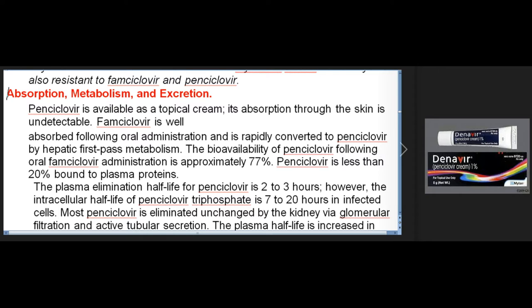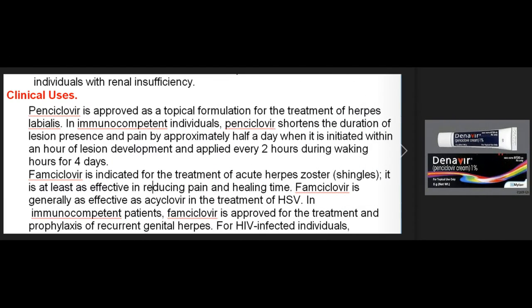Penciclovir is less than 20% bound to plasma proteins. The plasma elimination half-life for penciclovir is 2-3 hours; however, the intracellular half-life of penciclovir triphosphate is 7-20 hours in infected cells. Most penciclovir is eliminated unchanged by the kidney via glomerular filtration and active tubular secretion; the plasma half-life is increased in individuals with renal insufficiency. Clinical uses: Penciclovir is approved as a topical formulation for the treatment of herpes labialis and shortens the duration of lesion presence and pain by approximately half a day when initiated within an hour of lesion development and applied every 2 hours during waking hours for 4 days. Famciclovir is indicated for the treatment of acute herpes zoster (shingles) and is at least as effective in reducing pain and healing time.